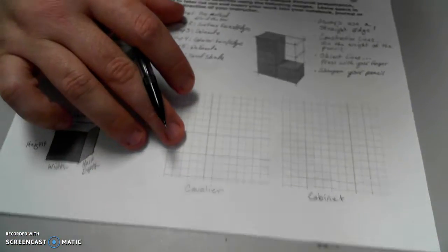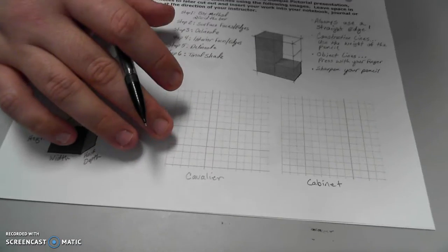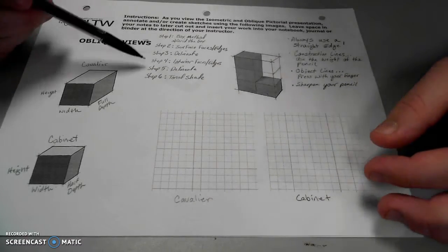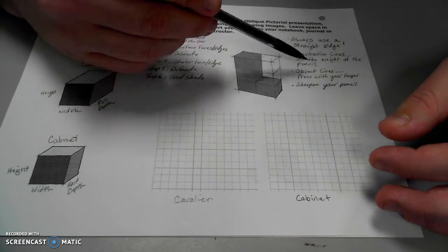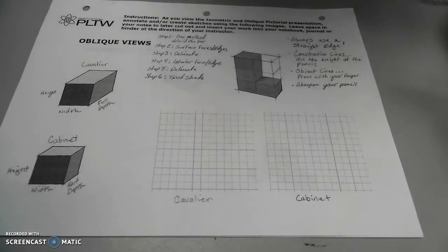Oblique sketches use a set of directions, a set of steps, as well as some guidelines that you ought to always follow anytime you're making any type of pictorial. Here's the handout that we use. You can see here the six different steps, as well as some basic understandings of what you ought to always have or use, just to keep in the back of your mind.